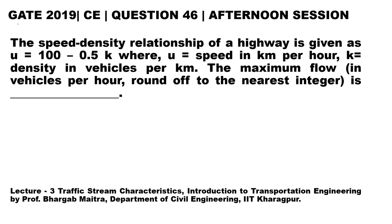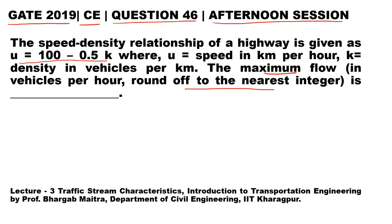Hello students. Let's see another question which came in GATE 2019 Civil Engineering — this was question number 46 in the afternoon session. The question states that the speed-density relationship of a highway is given as u = 100 - 0.5k, where u is speed in kilometer per hour and k is the density in vehicles per kilometer. The maximum flow in vehicles per hour is asked; round off to the nearest integer.